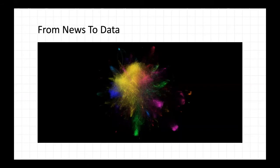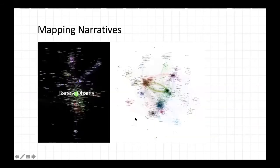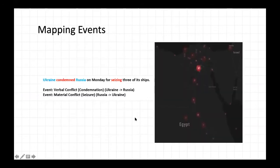How do we go from these piles of articles and piles of imagery into something that is actually processable? So the GDELT project has many different pieces.